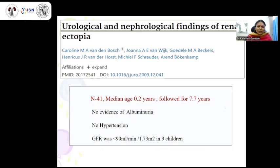A study examining urological and nephrological findings in ectopic kidneys followed 41 children with a median age of 0.2 years for 7.7 years. They did not encounter albuminuria nor hypertension. The only finding in nine children was reduced GFR of less than 90 ml per minute per 1.73 meters squared.